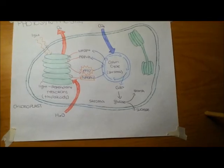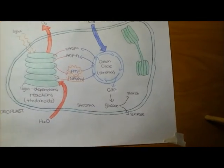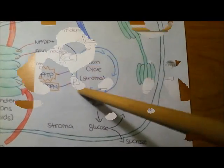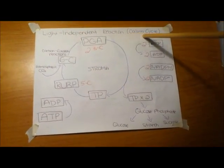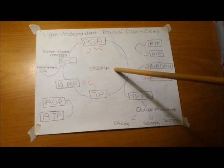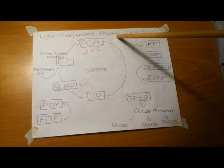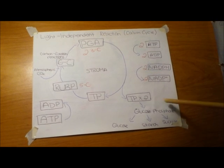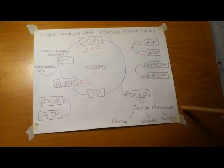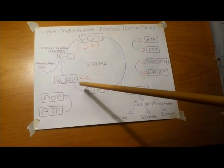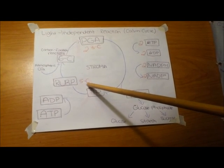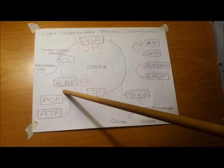Next, we are going to explain the Calvin cycle, also known as the light-independent reaction. The Calvin cycle occurs in the stroma, and it is also known as the light-independent reaction, carbon fixation, and the dark cycle. The Calvin cycle starts off with a five-carbon compound called RuBP.